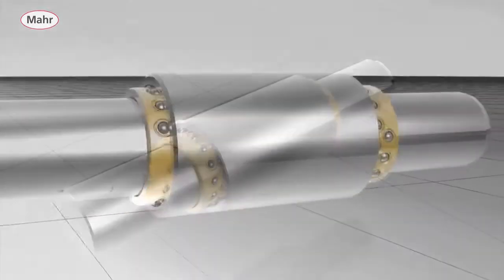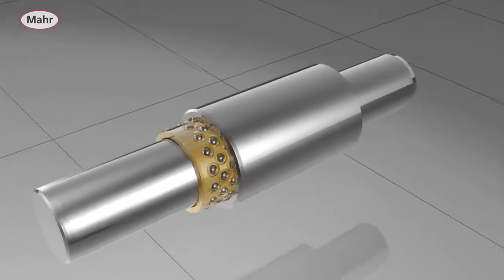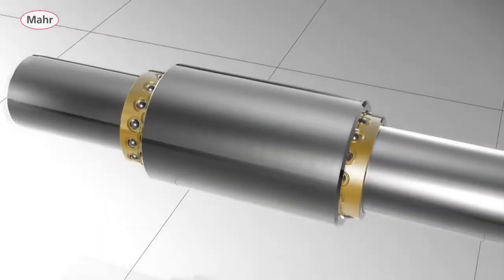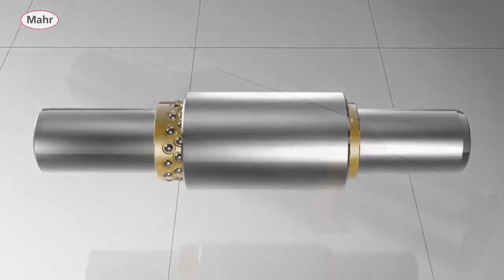Guide shaft, balls, and guide bushing are made of hardened and the highest quality rolling bearing steel. The steel's internal structure is stabilized through careful heat treatment.